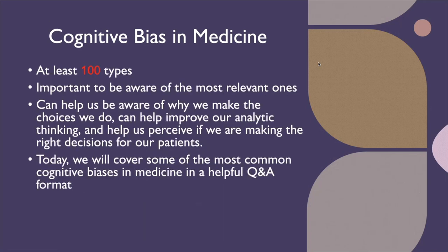There are at least 100 minimum types of cognitive biases, and it's impossible to discuss every one. Many of you may need to search the Internet to read more. But it's important to be aware of the most relevant ones. An understanding of cognitive bias can help us be aware of why we make the choices we do, improve our analytic thinking, and help us perceive if we're making the right decisions for our patients. What follows is 10 clinical cases, each associated with an important type of cognitive bias.